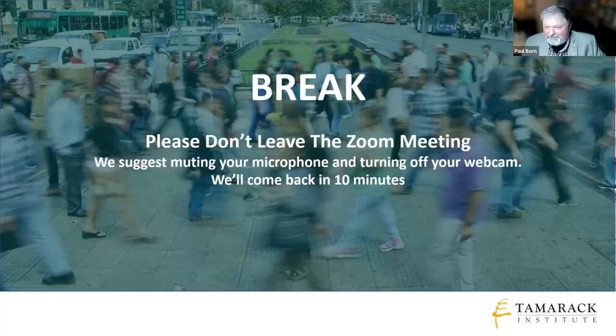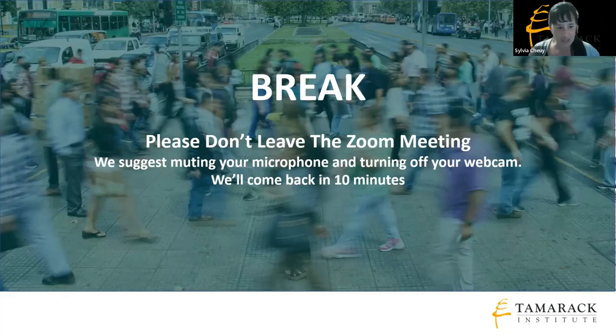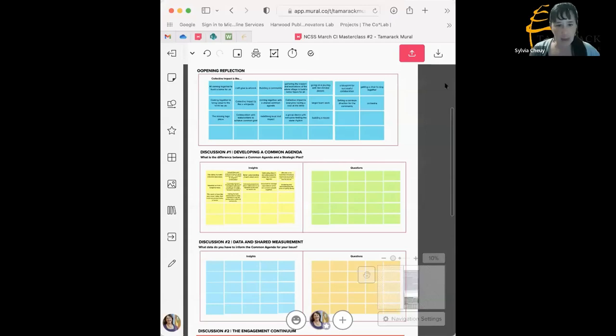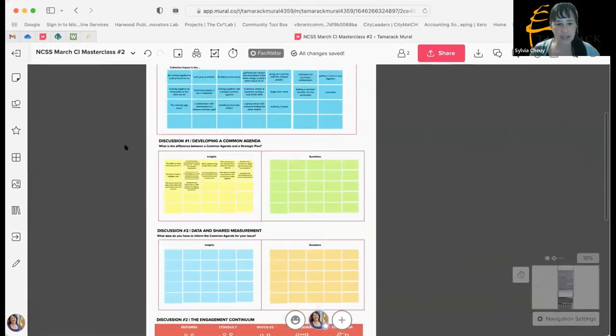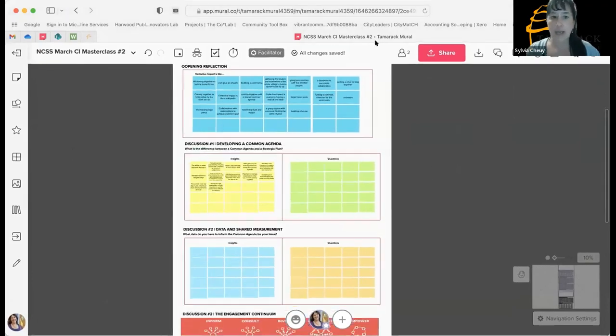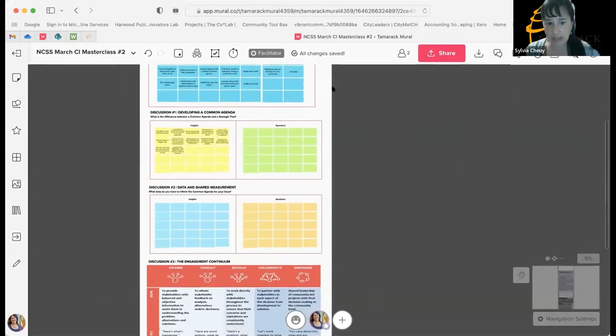We'll give everybody a minute. So before we go to the slide deck, Isaac, do you want to do the screen share of what we've been doing for everybody? While you've been chatting in the background, what we've been doing for you is creating a map about what you say collective impact is — what some of the insights are that you've shared around the common agenda. We'll keep doing this through the session, so at the end you'll have a nice record of the different comments.